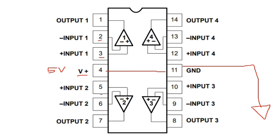Pin five and pin six are inputs for amplifier two, and the output is pin seven. The same principle applies: pins ten and nine are inputs for the third amplifier with its output, and pins twelve and thirteen are inputs for the fourth amplifier with output at pin fourteen. So this integrated circuit contains four amplifiers and four outputs.